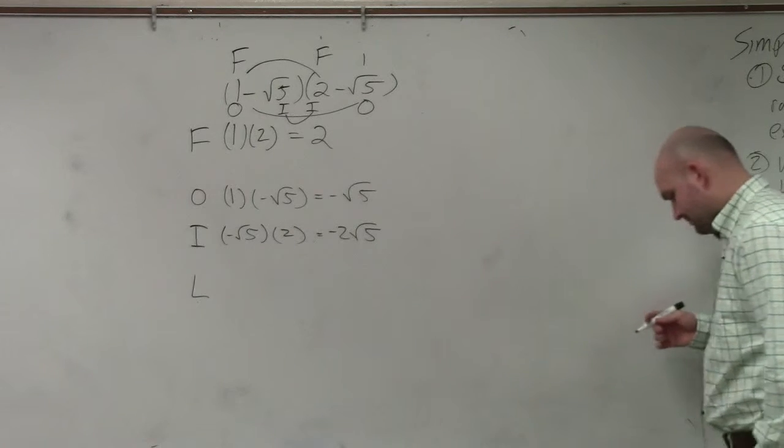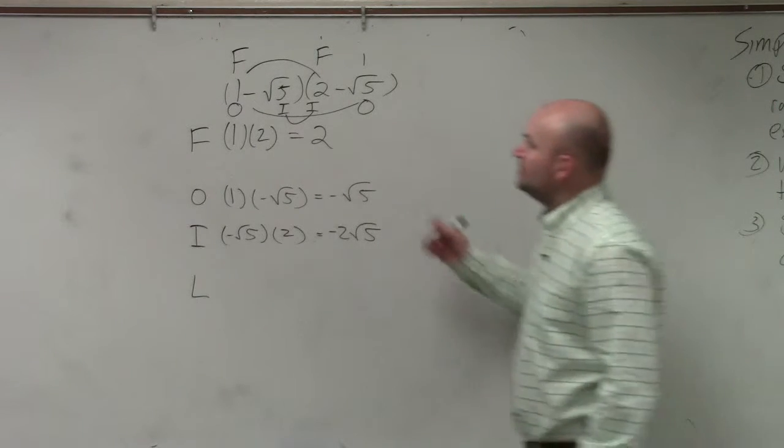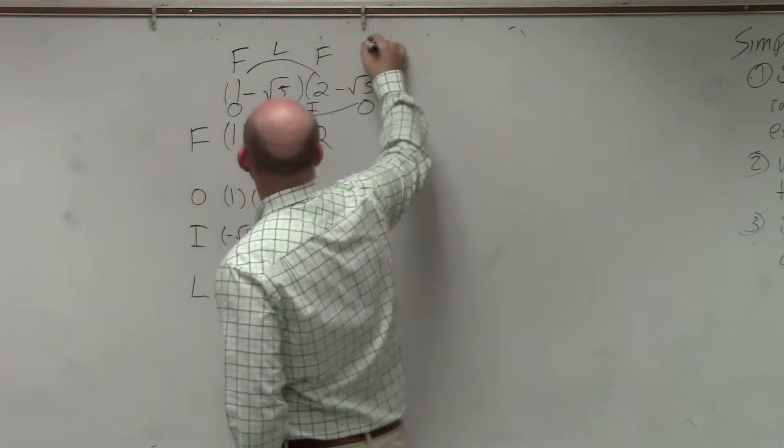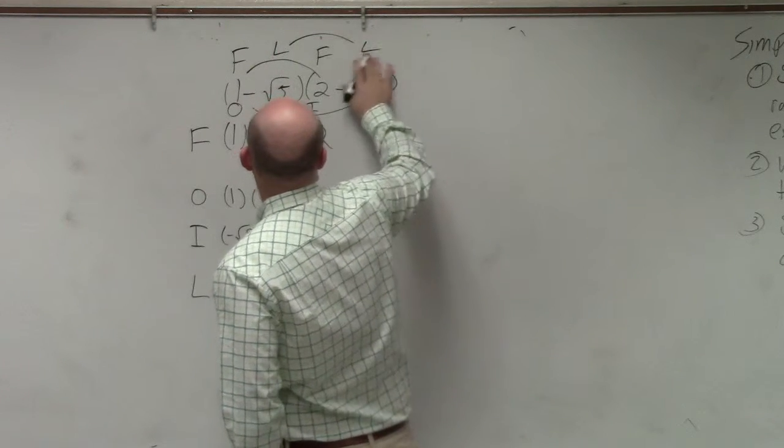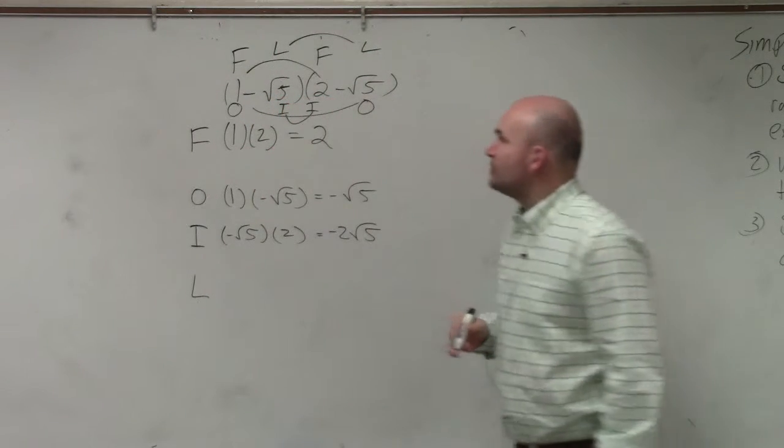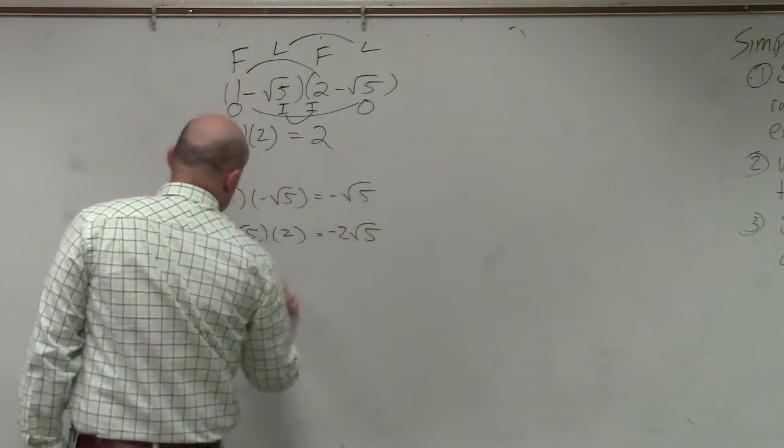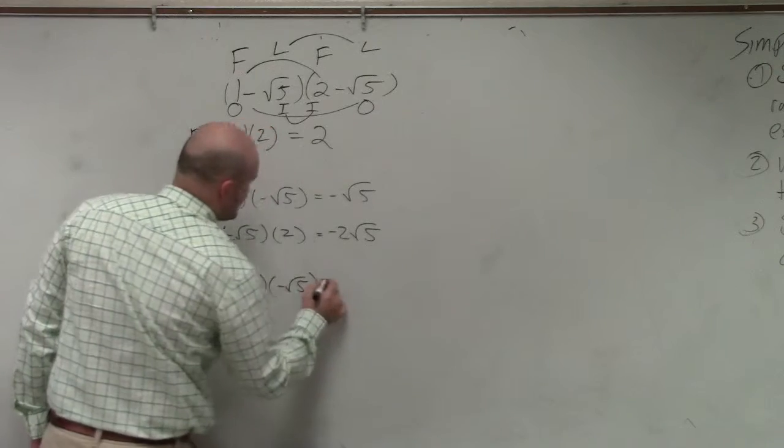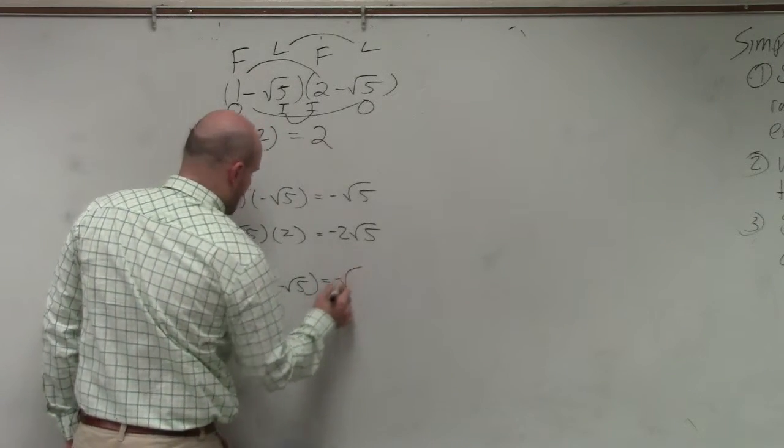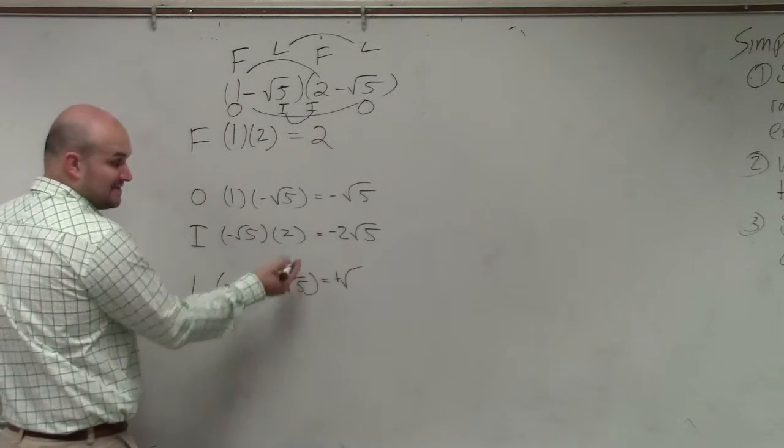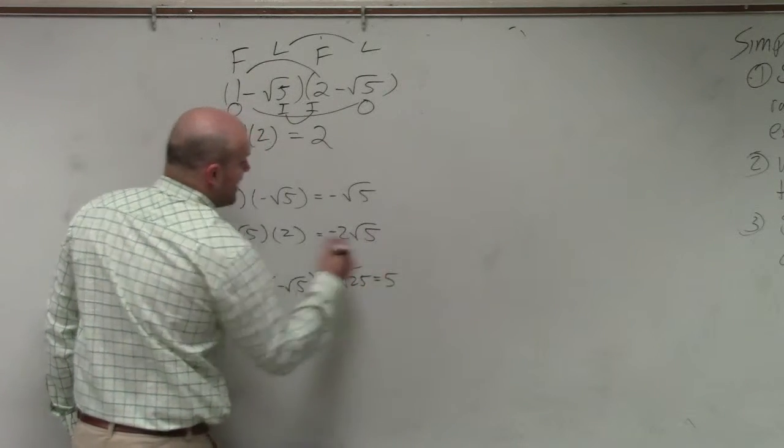And then the last one is going to be the last terms in each binomial. That's negative square root of 5 times negative square root of 5. Well actually, that's going to be positive, right? Negative times negative is positive 25, which equals 5.